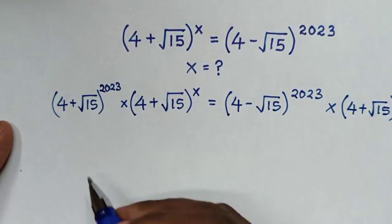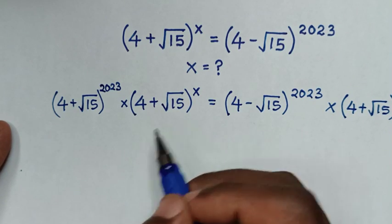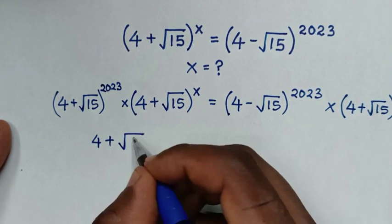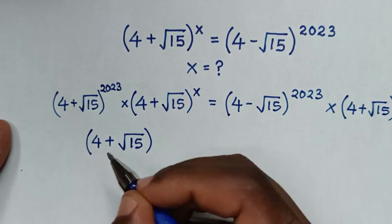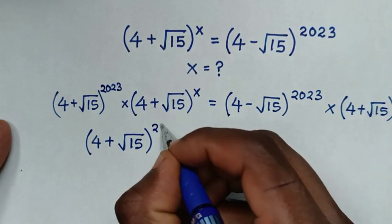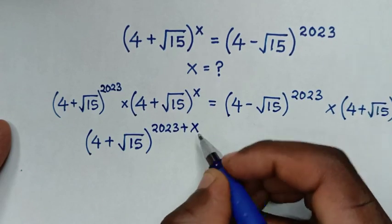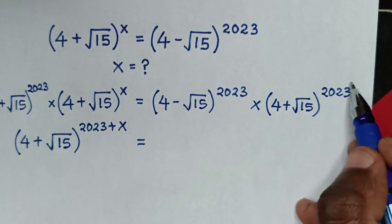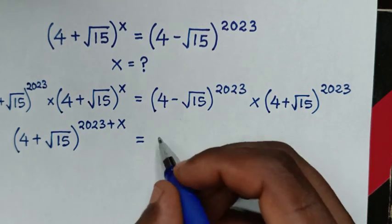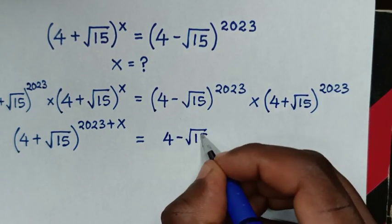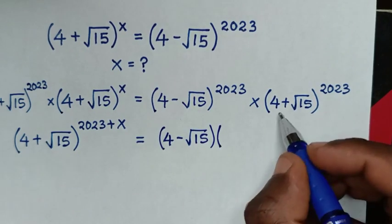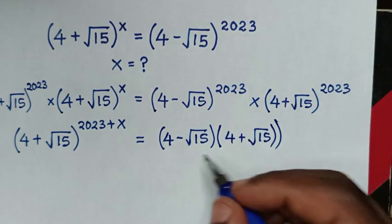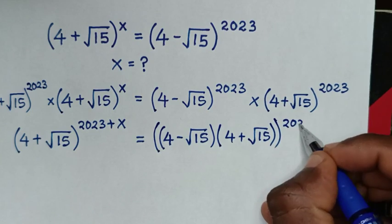On the left side, we have multiplication of exponents with the same base of (4 plus square root of 15). So we write the same base and add the powers: (4 plus square root of 15) to the power of (2023 plus x). On the right side, we have multiplication of exponents with the same power of 2023, so we multiply the bases: (4 minus square root of 15) times (4 plus square root of 15), all to the power of 2023.